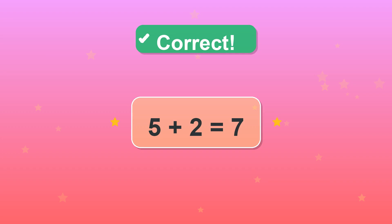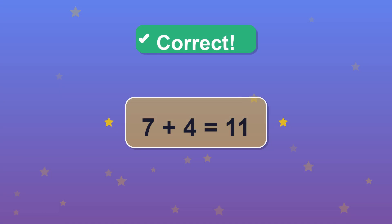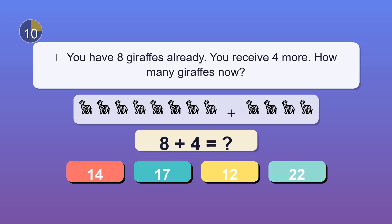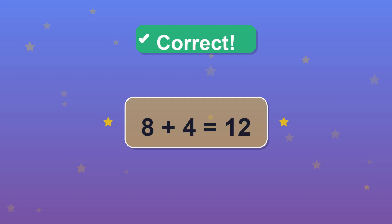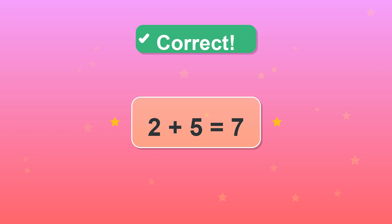Exactly. Seven. You start with seven chicks in the group. Four more join the group. How many chicks now? 11. Fantastic. You have eight giraffes already. You receive four more. How many giraffes now? 12. Superb. You count two cows outside. Five more come outside. How many cows now? 7. Stellar.